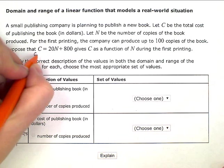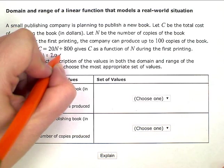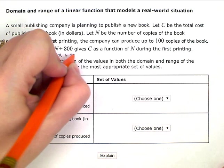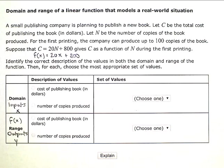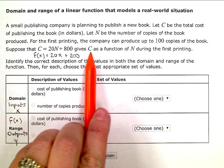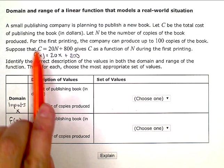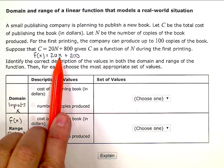So F of X equals 20X plus 800. If I rewrote it using F of X notation. Now I know that C is the F of X and not the plain X because it says C is a function of N. So the C is the function value, right? And N is the input.